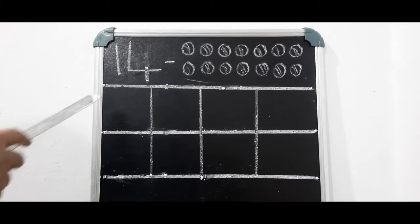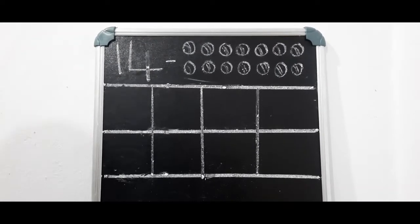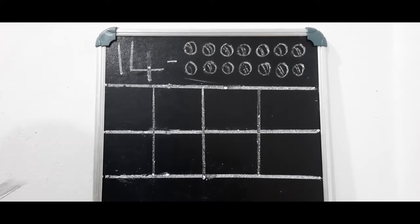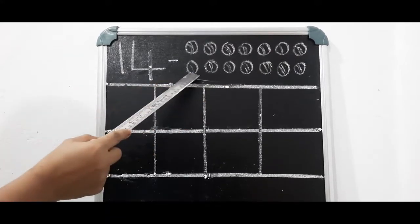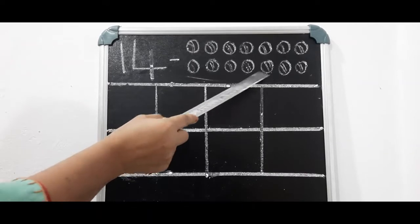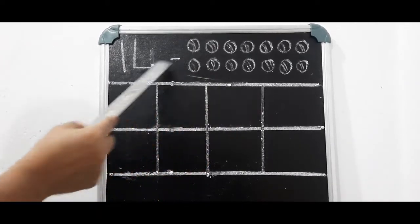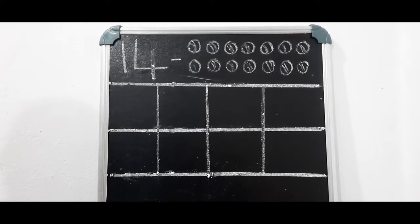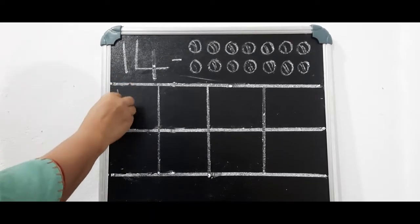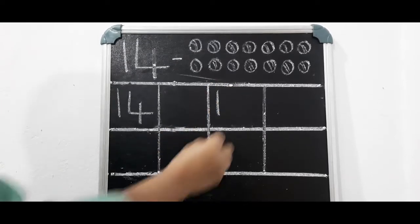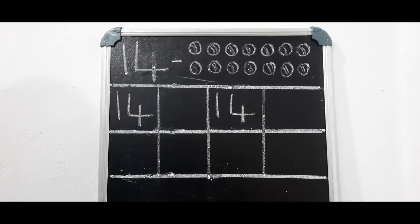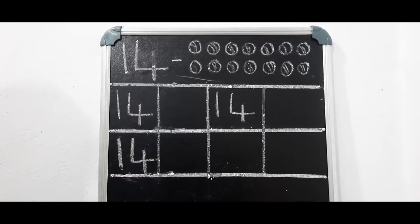Now ma'am is going to show you how to write number 14. Children, 14: 1, 4 — 14. Now let's count the balls. 1, 4 — 14. Now ma'am is going to show you how to write number 14: 1, 4 — 14. Okay children, you have to write and practice in your square line notebook.